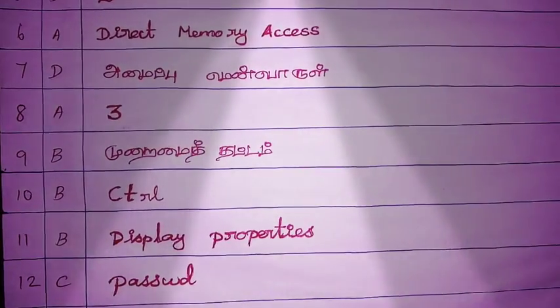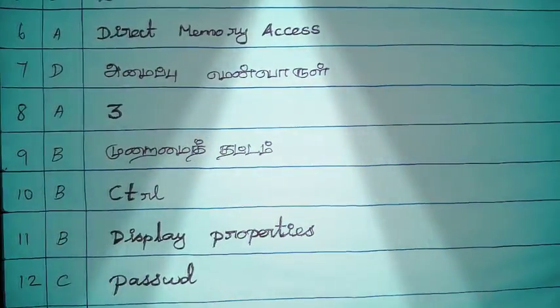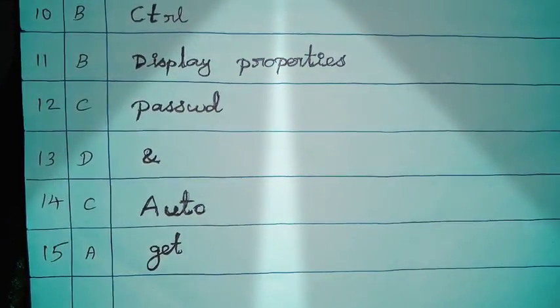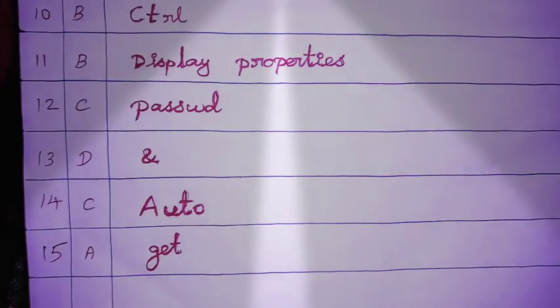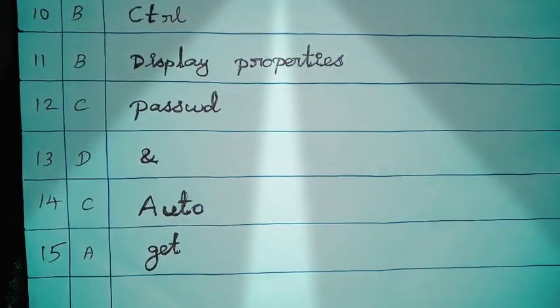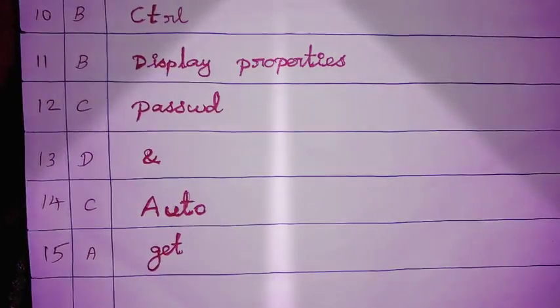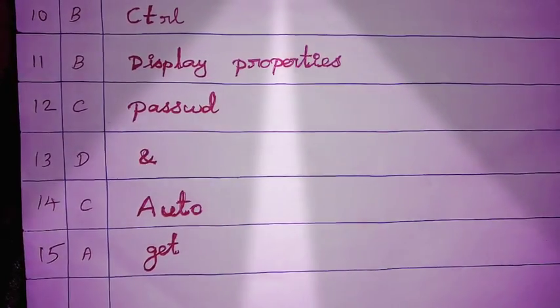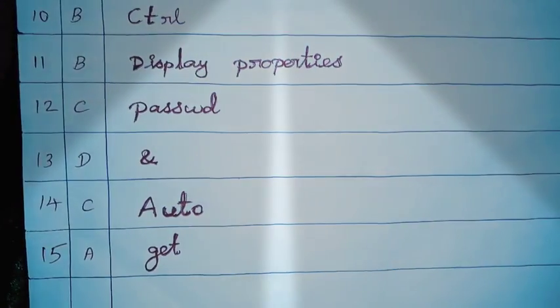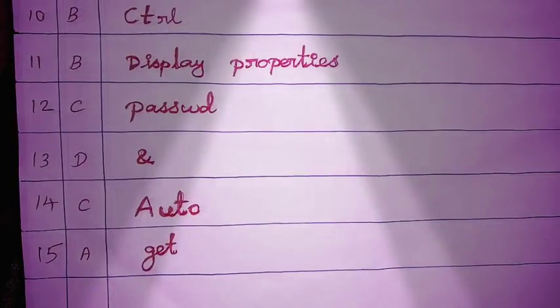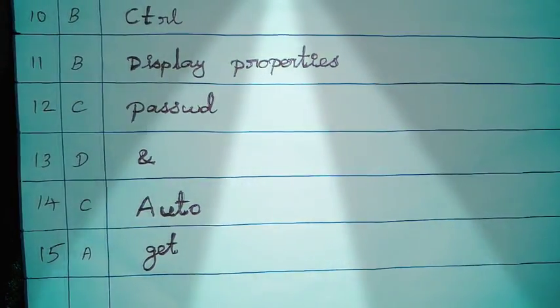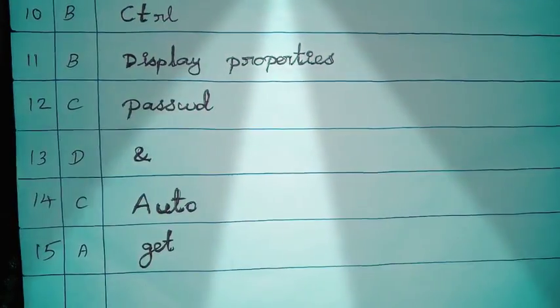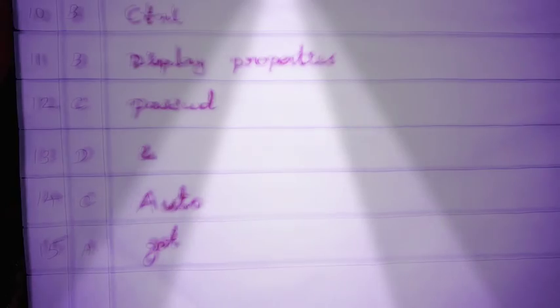Question number 11, option B, display properties. Question number 12, option C, password. Question number 13, option D, &. Question number 14, option C, Auto. Question number 15, option A, get.